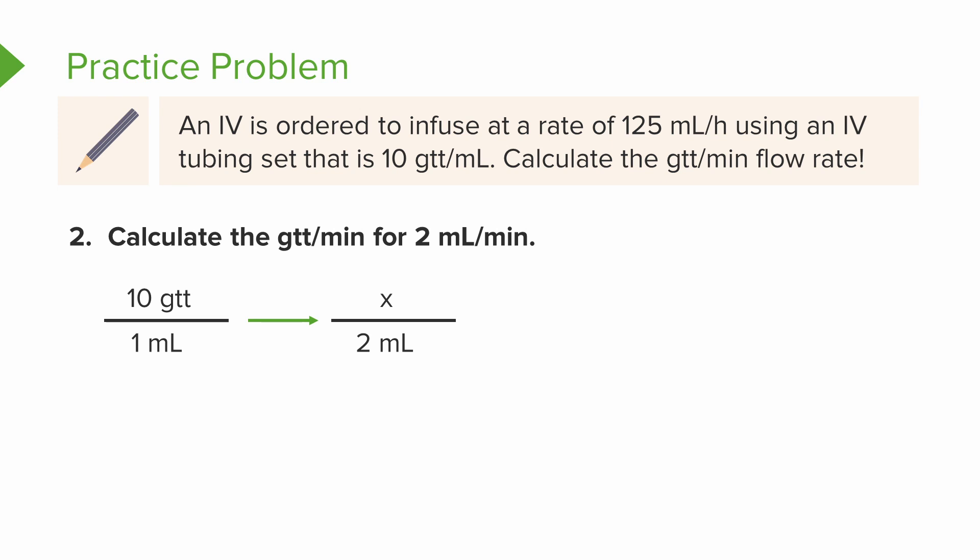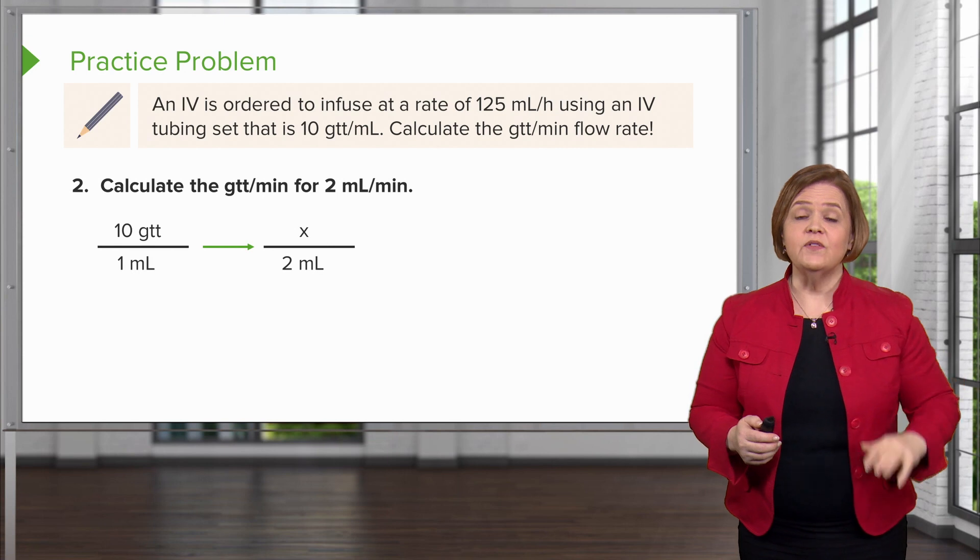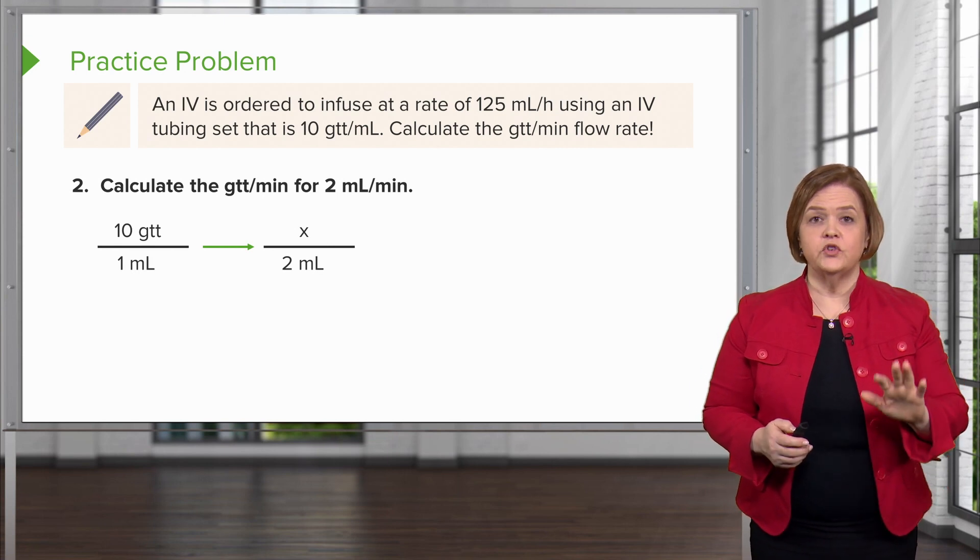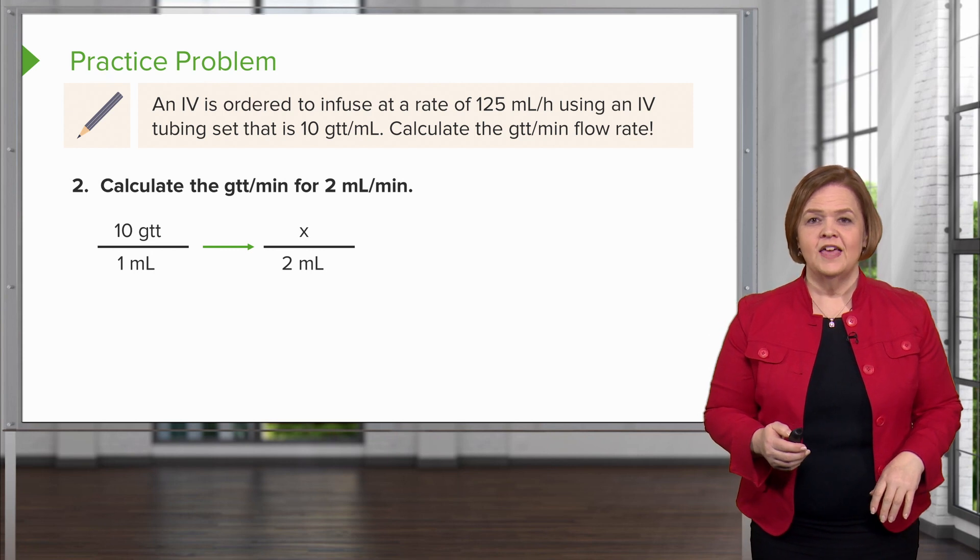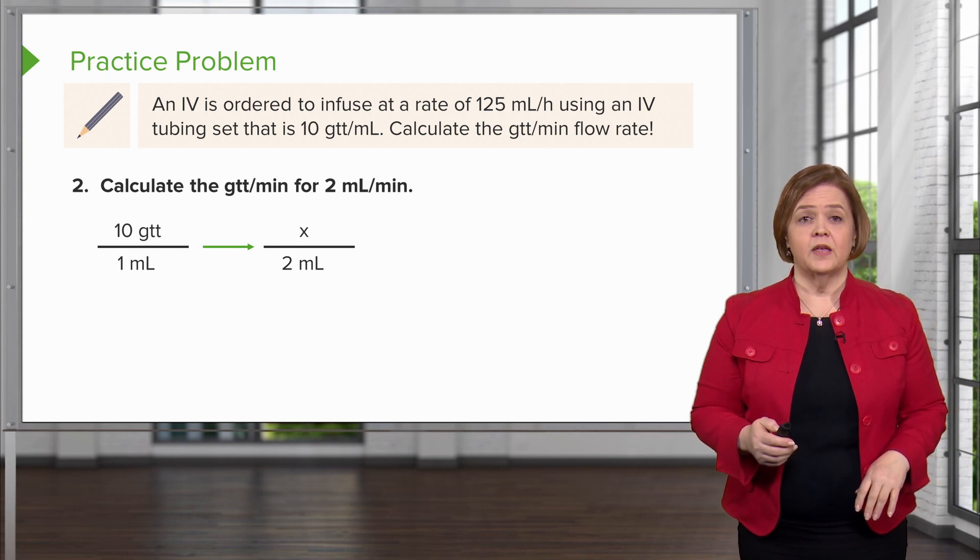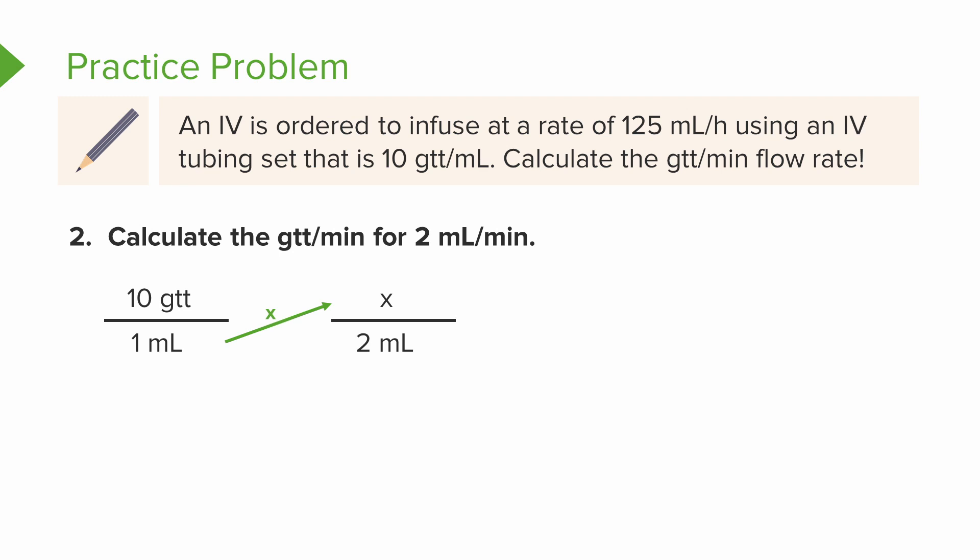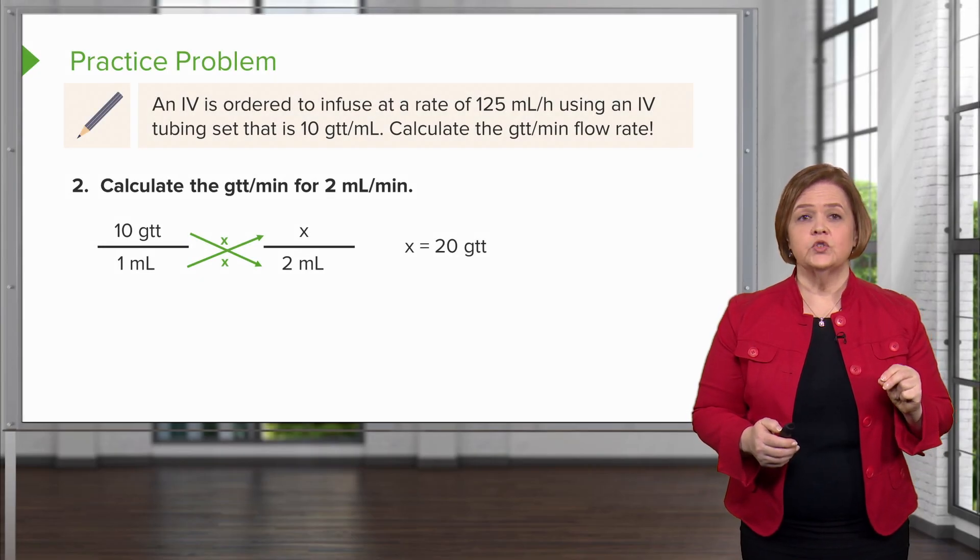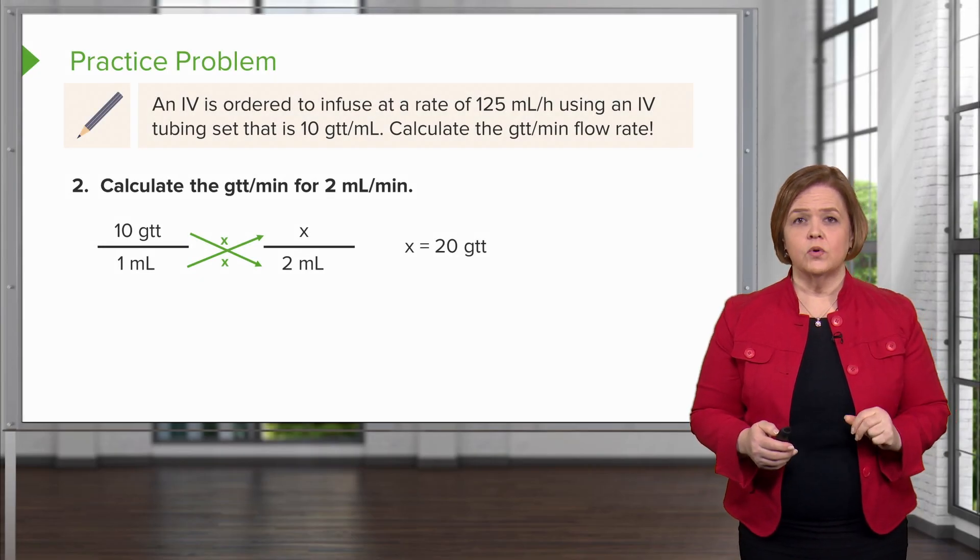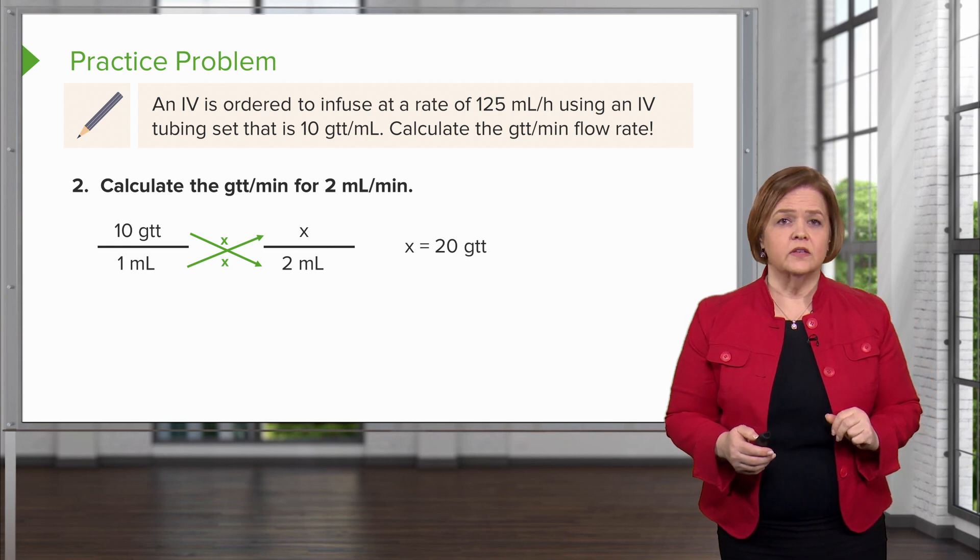Even if you can already do the math in your head, don't - I want to use this simple example as a formula. The next step is to cross multiply: 1 times x and 10 times 2. So now I have 1x equals 20, which means x equals 20.